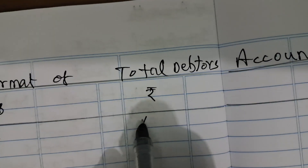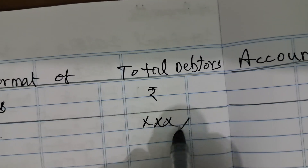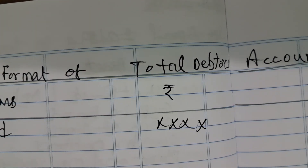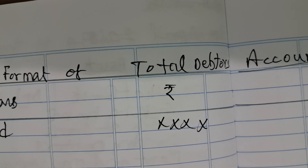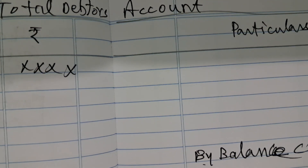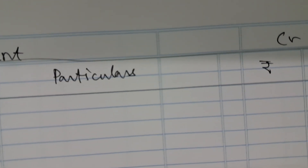The closing balance of debtors is entered on the credit side. Since opening balance always shows a debit balance, it is entered on the debit side as 'To Balance b/d'. On the credit side, the last item will be 'By Balance c/d', which is the closing balance of debtors.